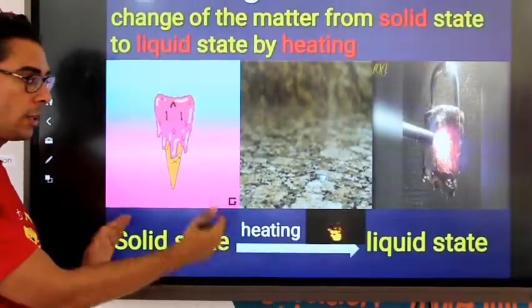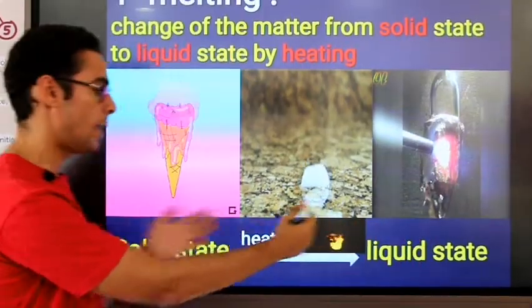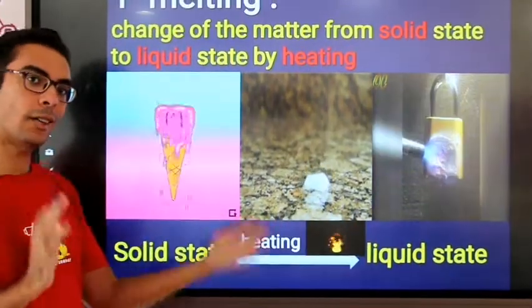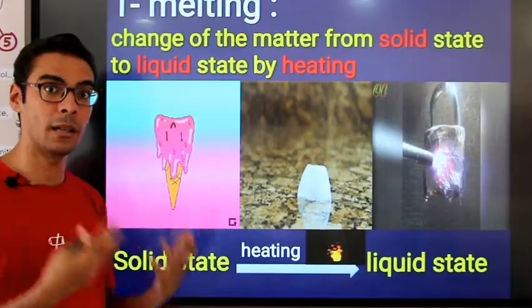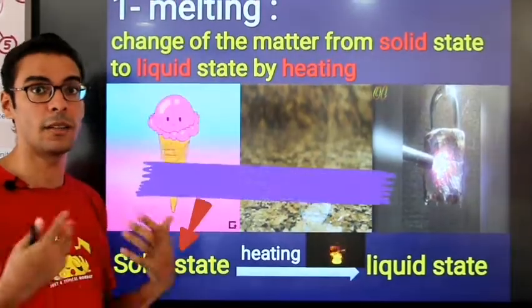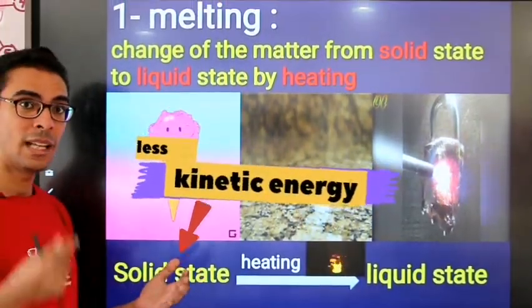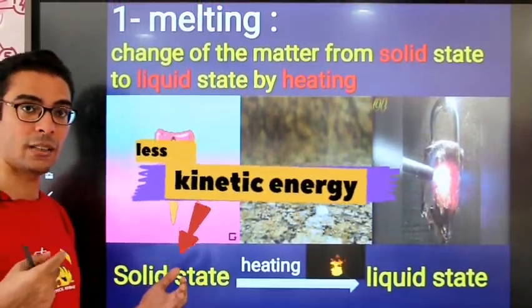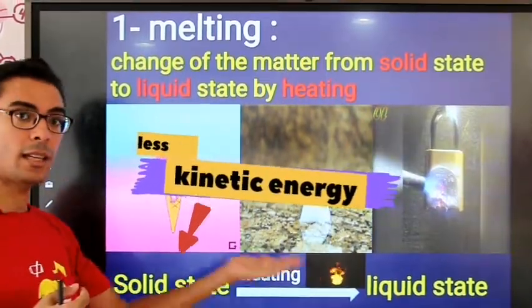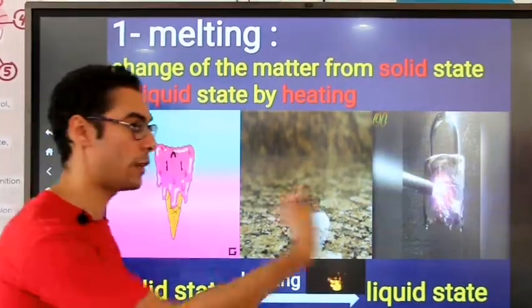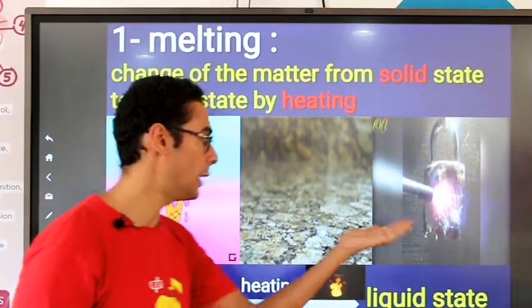The solid particles are changing into liquid particles. Actually they are the same particles, but the only difference is the amount of energy they have. The solid particles have less kinetic energy and less thermal energy. When they gain heat, the particles start moving faster, so they become a liquid matter.